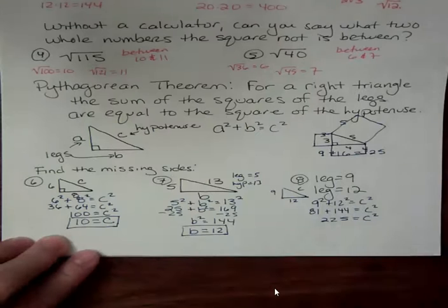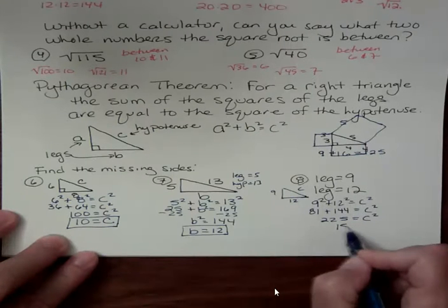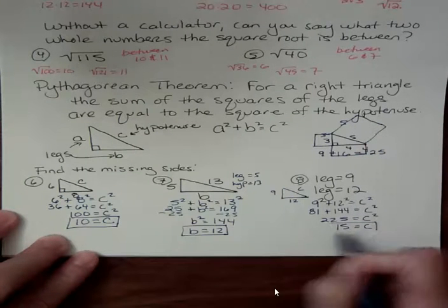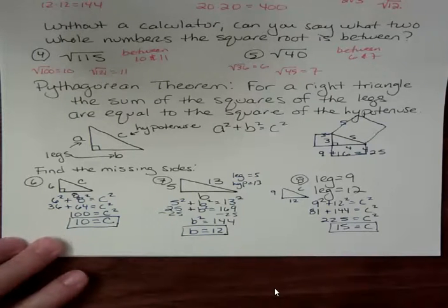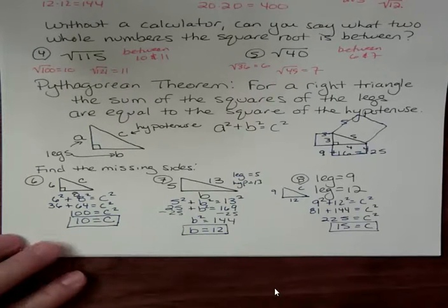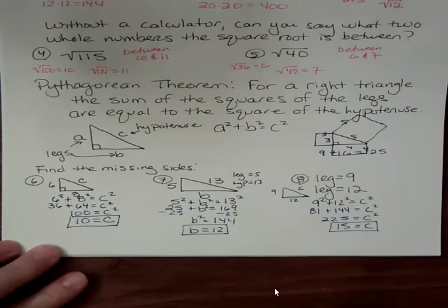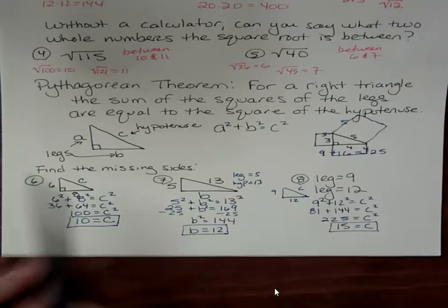Is it possible that you would have a problem like this where it wouldn't come out to be a whole number? Yes. You could get 12.72. Just look at the directions. If it says round to the thousands or the hundreds or whatever, you round it to where they ask. What I find is that a lot of Pythagorean theorem problems round to the thousands if they don't come out to be even. So keep that in mind. Have a fantastic day.